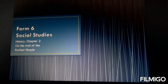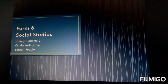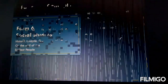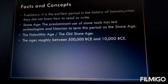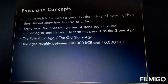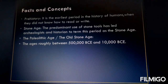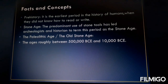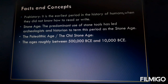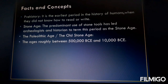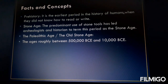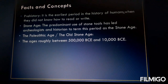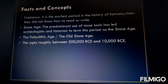What do you mean by the word 'trail'? Trail means journey. Now, what are the facts and concepts of this? We learn through a few keywords. First is Prehistory — it is the earliest period in the history of humans where they don't know how to read and write. They were not having any particular language or script.